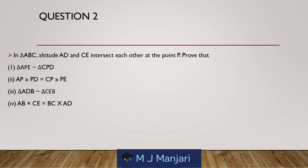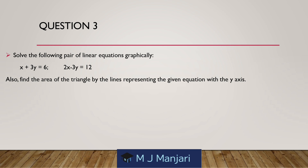Second question. In a triangle ABC, altitudes AD and CE intersect each other at the point P. Prove that: triangle APE is similar to triangle CPD; AP into PD is equal to CP into PE; triangle ADB is similar to triangle CEB; AB into CE is equal to BC into AD.